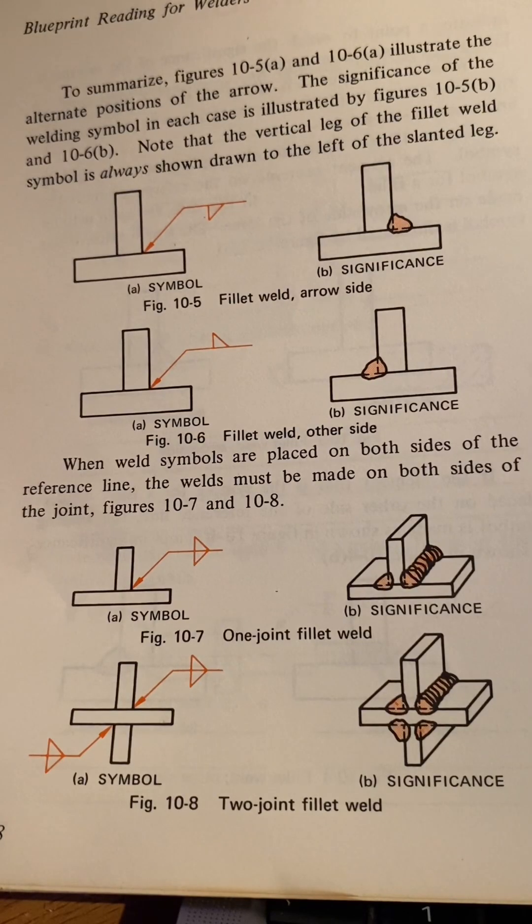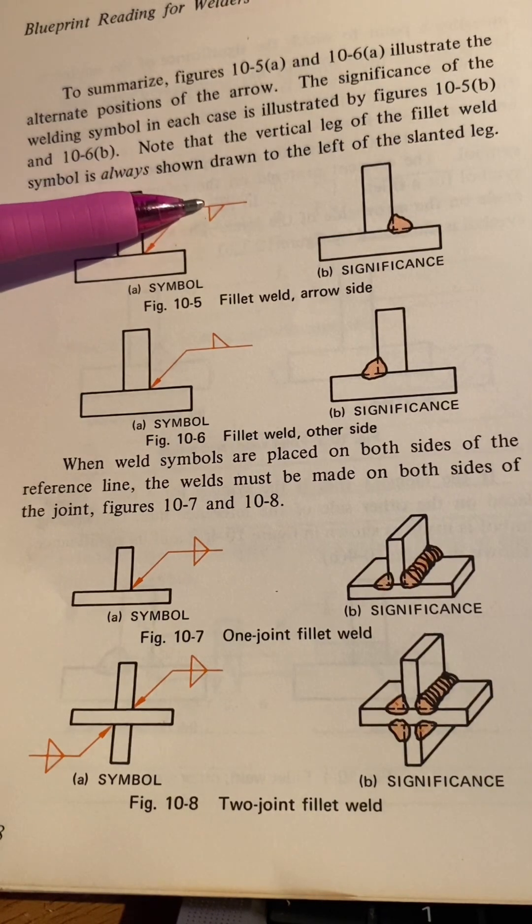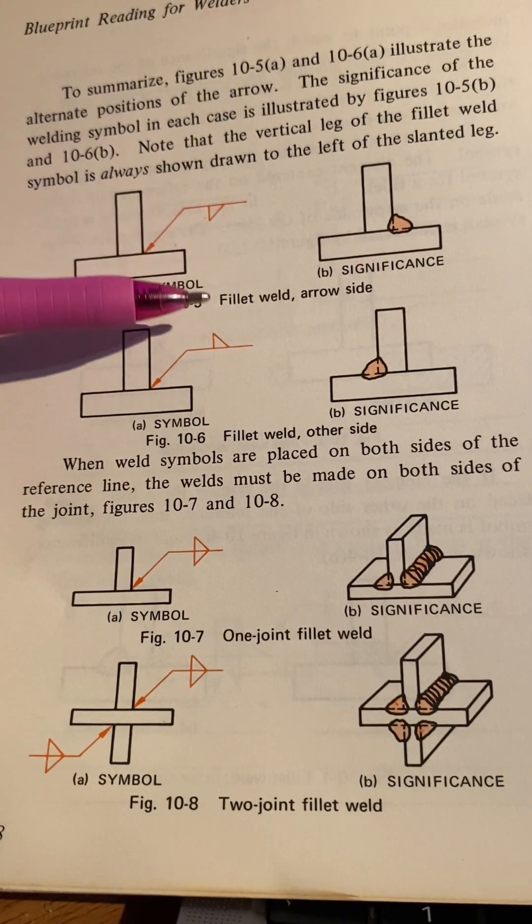Note that the vertical leg of the fillet weld symbol is always shown drawn to the left of the slanted leg. This is the left of the leg, slanted leg, vertical side. It's always to the left.